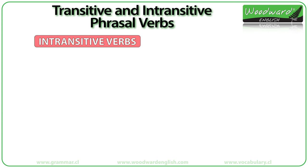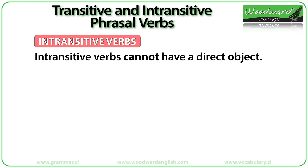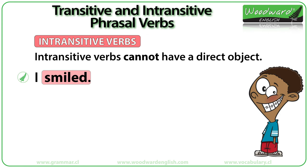Now let's look at intransitive verbs. Intransitive verbs cannot have a direct object after them. For example: "I smiled." Here, we cannot have an object after the intransitive verb "smile."